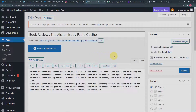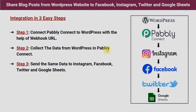Let me give you the easiest possible steps to make this automation. There are three easy steps. Step one: connect Pabbly Connect to WordPress with the help of a webhook URL. Step two: collect the data from WordPress in Pabbly Connect. Step three: send the same data to Instagram, Facebook, Twitter, and Google Sheets.